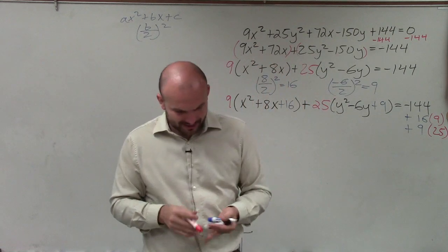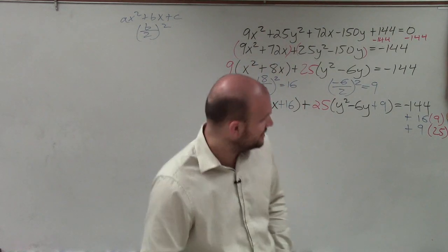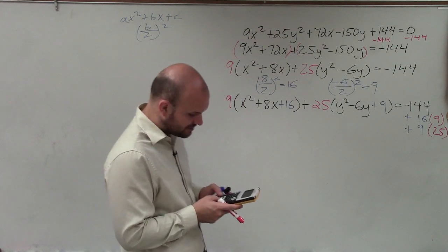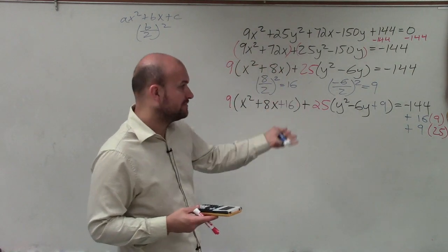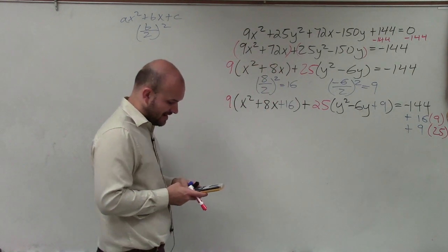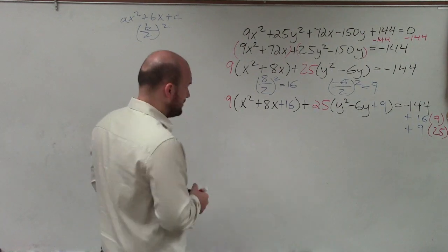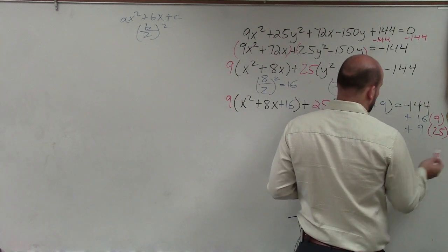I'm just going to use my handy dandy calculator to figure all this out. 16 times 9 is 144. Minus 144 is going to be 0. 9 times 25 is going to be 225. So by doing all of this math, I end up getting 225.